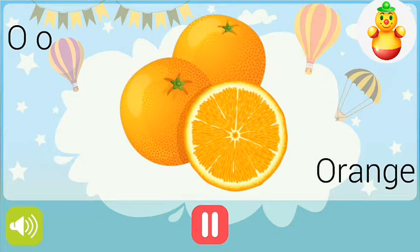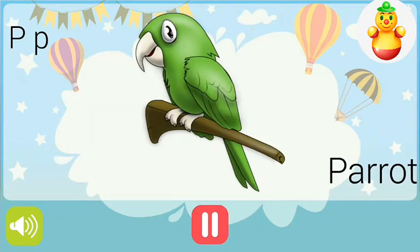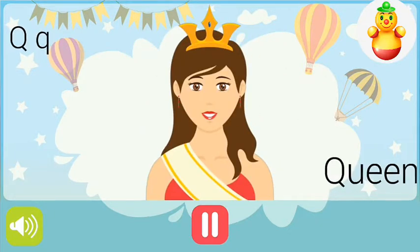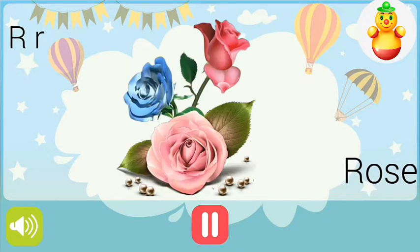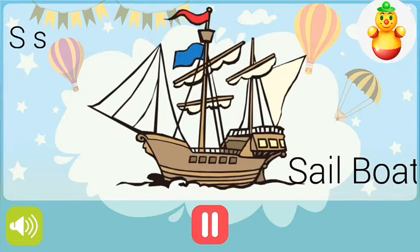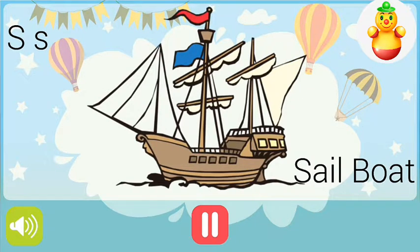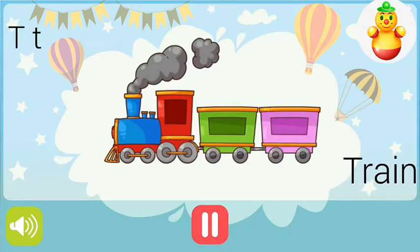P for parrot, Q for queen, R for rose, S for sailboat, T for train.